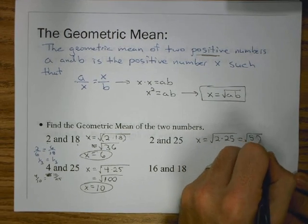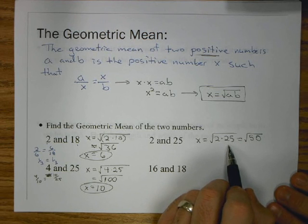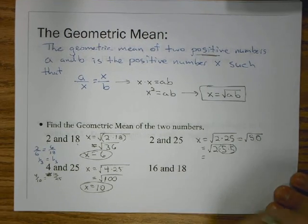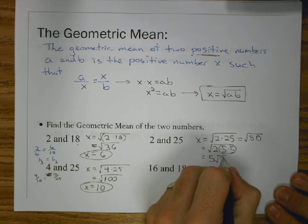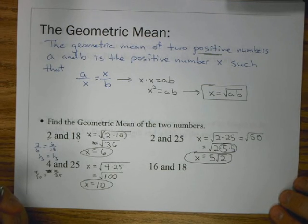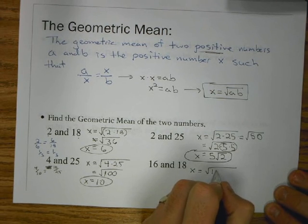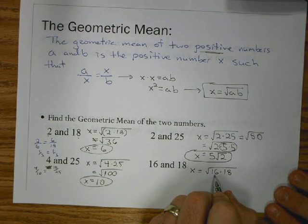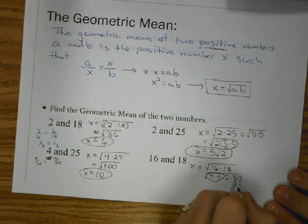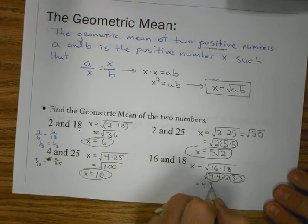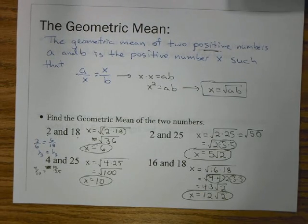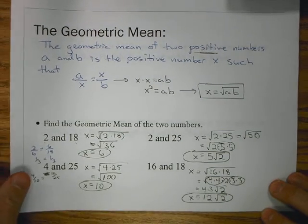Those are nice because they were perfect squares. They simplified nicely. Sometimes we have to write it in simplified radical form. So, now I have X equals the square root of 2 times 25. Let's leave it in this broken form to see how we can actually break it down. 2 times 25 is 2 times 5 times 5. If I have two 5s inside of a radical, I can put those together, take them and put them outside my radical. So, I'm left with 5 on the outside, radical 2 on the inside. For X equals the square root of 16 times 18, 16 is 4 times 4, 18 is 2 times 3 times 3. So, I can take a 4 out, I can take a 3 out, radical 2 left, it becomes 12 radical 2.